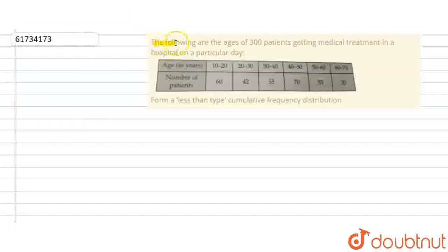The question is: The following are the ages of 300 patients getting medical treatment in a hospital on a particular day. We have given a table in which age in years and number of patients are given from a less than type cumulative frequency distribution. According to the question,